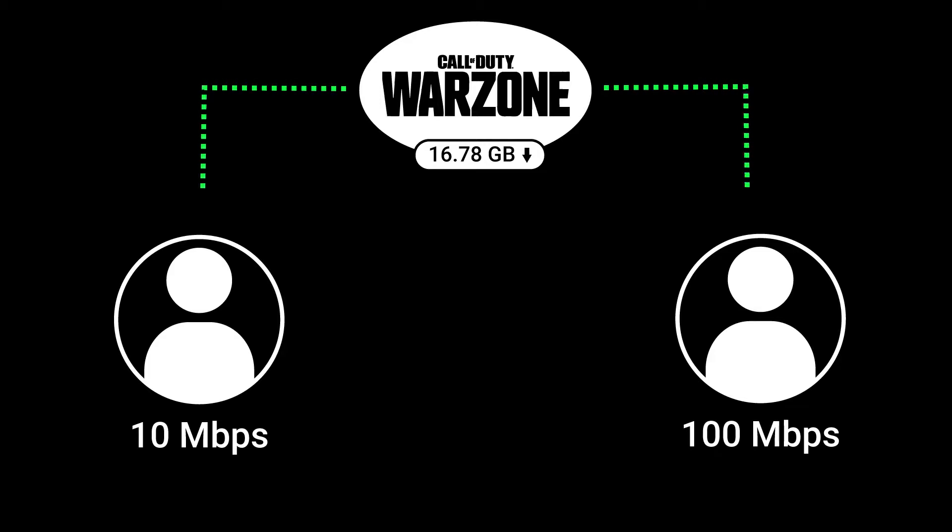You're on a 100 Meg connection and I'm on a 10 Meg connection. We know instinctively that your download is going to happen faster than mine, but it's not just a simple case of you receiving the data really quickly and then your download being done. There's a lot more to it, and this is where TCP congestion control works its magic. To start with, data is sent to us both at exactly the same rate.